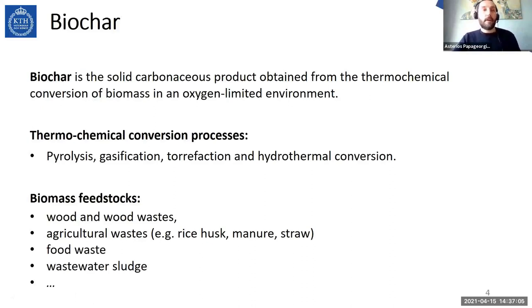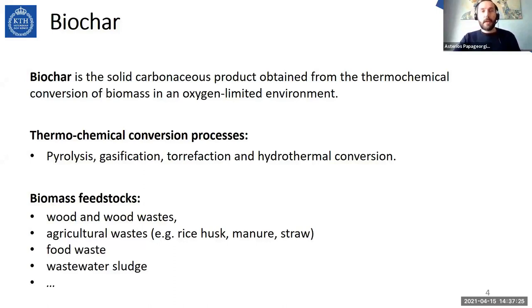Biochar is the solid carbonaceous product obtained from the thermochemical conversion of biomass in an oxygen-limited environment. There are different thermochemical conversion processes like pyrolysis, gasification, and torrefaction. The most common process used for production of biochar is pyrolysis. There are many different types of biomass feedstocks like wood and wood waste, agricultural waste like manure, food waste, wastewater sludge, and many others.